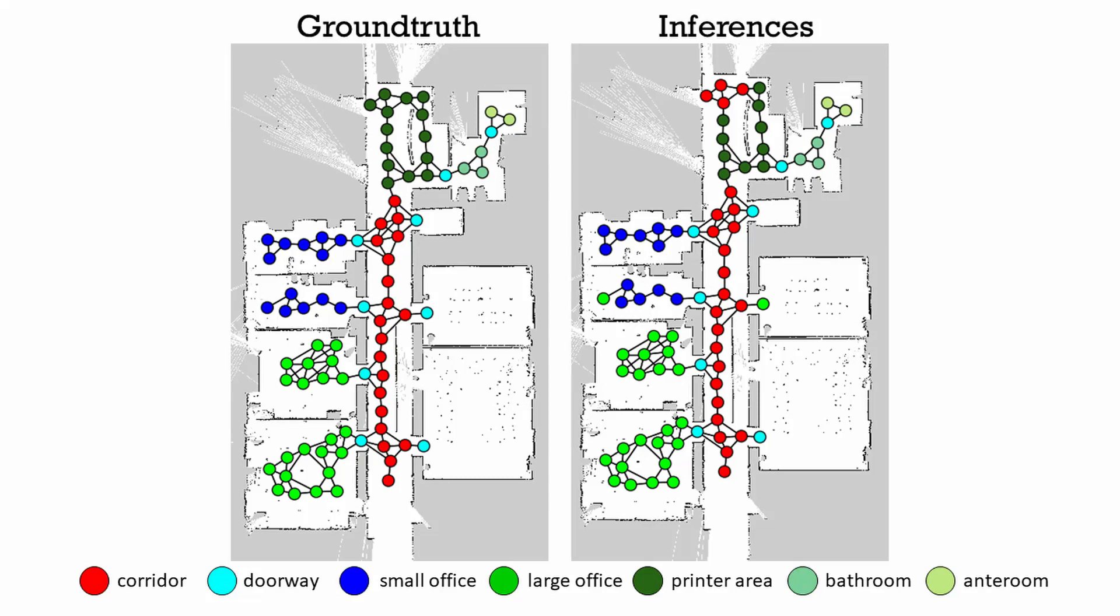We learned the network on three floors of an office building and tasked it with understanding of another floor. Here we show topological graphs of the test floors with colors indicating semantic categories for each place.